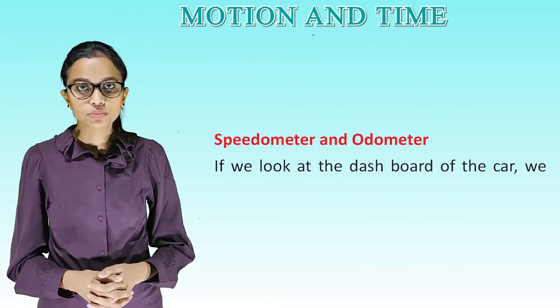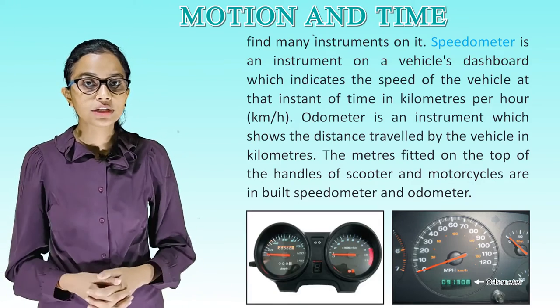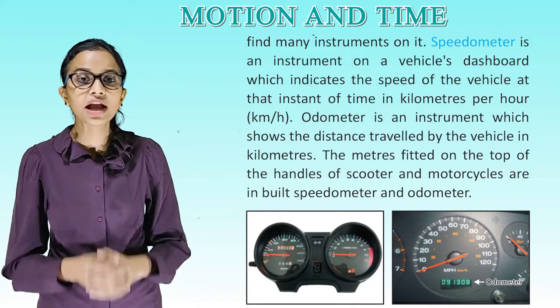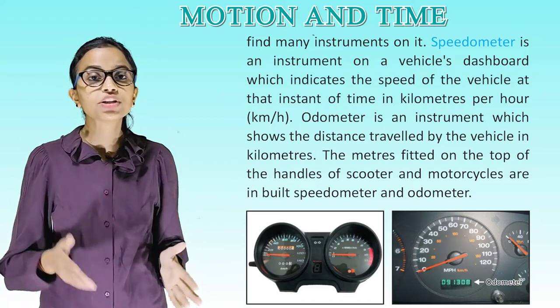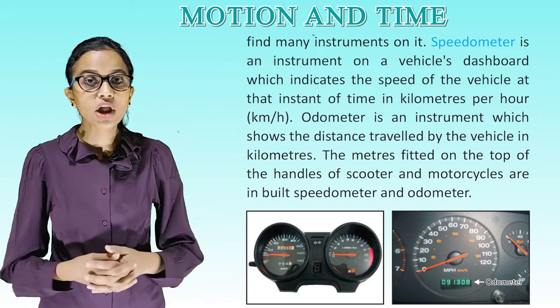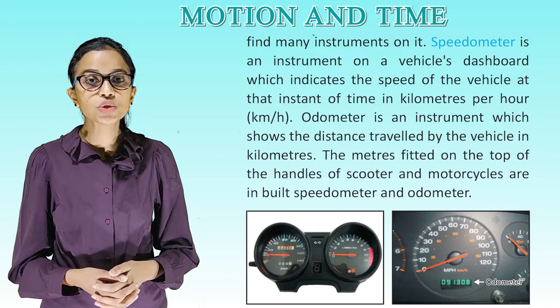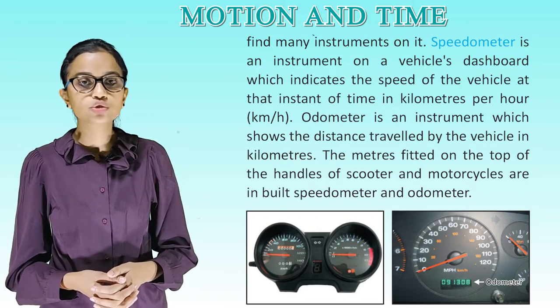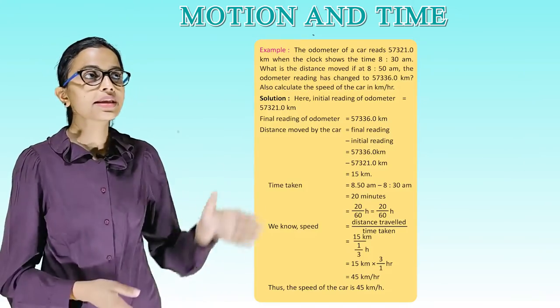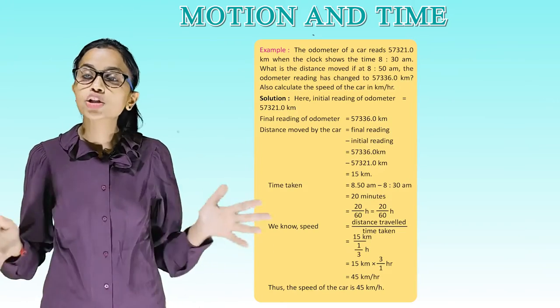Speedometer and odometer. If we look at the dashboard of the car, we find many instruments on it. Speedometer is an instrument on a vehicle dashboard which indicates the speed of the vehicle at that instant of time in kilometers per hour. Odometer is an instrument which shows the distance traveled by vehicle in kilometers. The meters fitted on the top of handles of scooter and motorcycles are inbuilt speedometer and odometer as shown in the picture. So students, there is another example which is given, so go through it and also try to solve it.